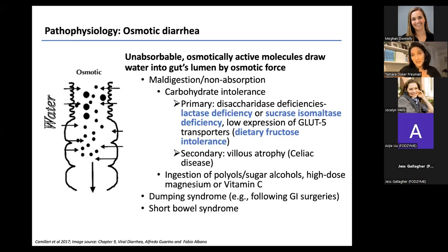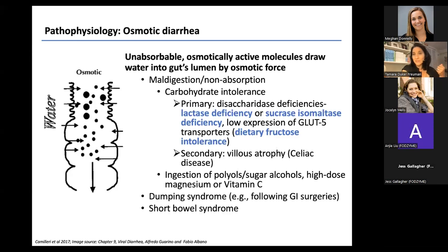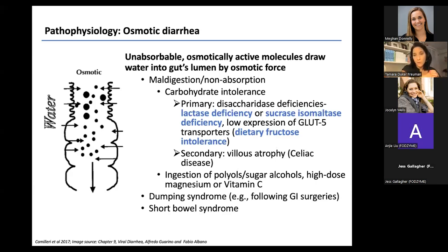Fructose intolerance is not an enzyme deficiency but rather a low expression of the GLUT5 receptor in the small bowel, which is responsible for transporting fructose from the bowel into the body. If you don't have enough of this transporter but eat a lot of fructose, you'll exceed your absorption capacity and have a large amount of malabsorbed fructose in the bowel as an osmotically active particle drawing water in.